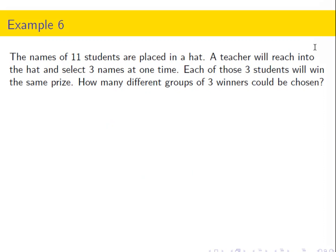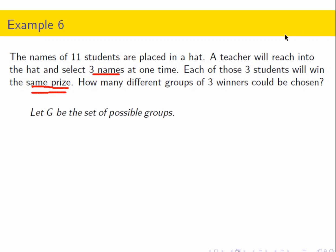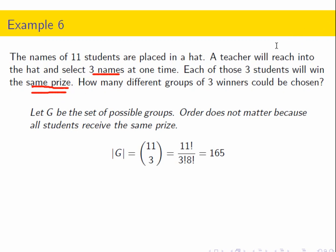If the names of 11 students are placed in a hat and a teacher selects three names where each student wins the same prize, this is a combination. If they won different prizes that students value differently, it would be permutations. But since they're getting the same prize, this is combinations. We use 11 choose 3, which is 11 factorial over 3 factorial times 8 factorial, giving us 165 different possible groupings.